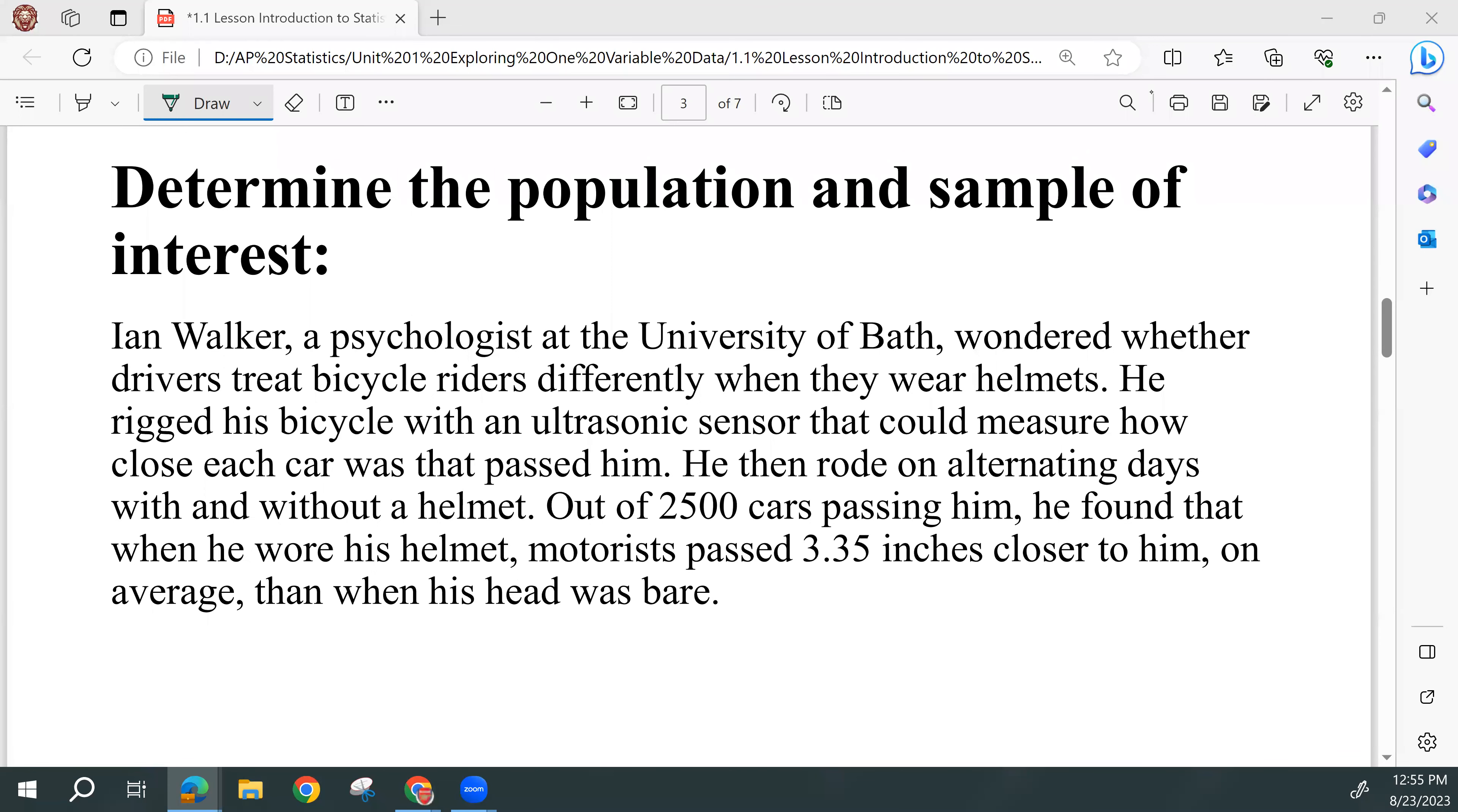So there's a lot of information here about what this psychologist was doing, trying to determine the driving behaviors by bicycle riders. So there's a lot of stuff we can pick out of here, but what we want to know is what was our population we are interested about, and then what was the sample taken in order to draw a conclusion about the population?